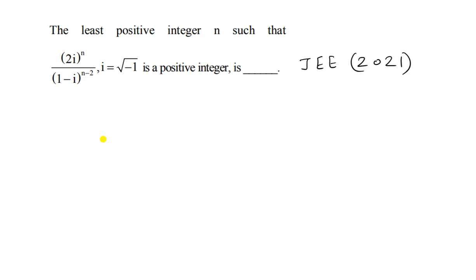The question asks for the least positive integer n such that (2i)^n / (1 - i)^(n-2) is a positive integer. We know that iota is equal to the square root of minus 1.